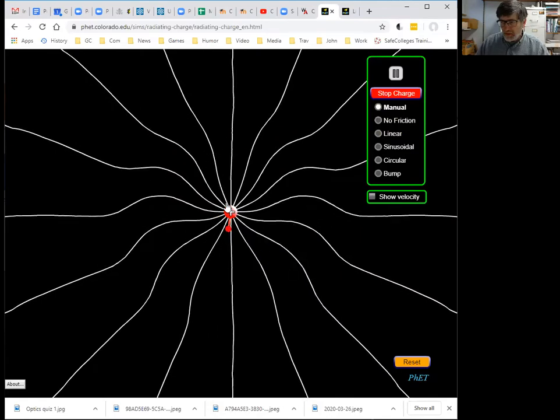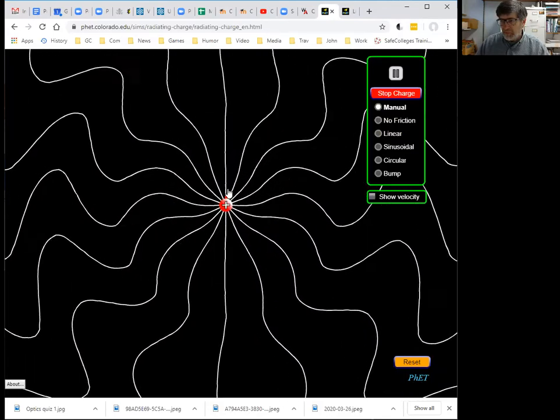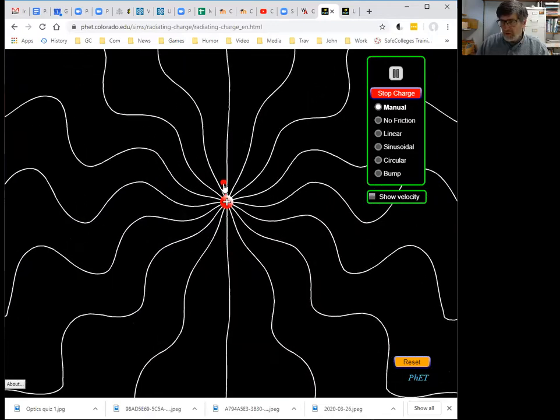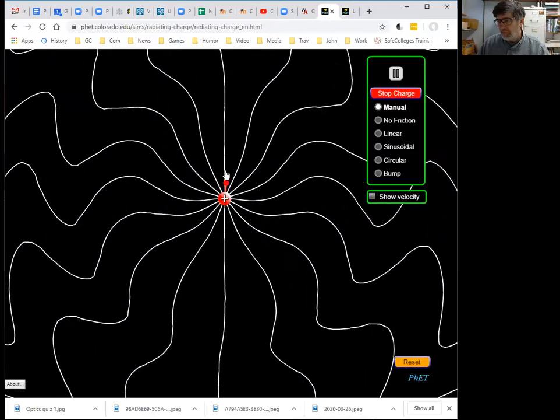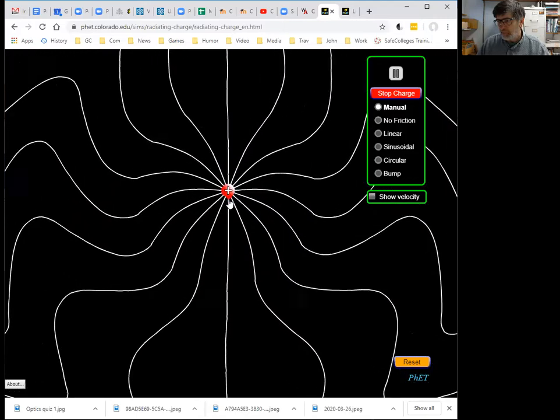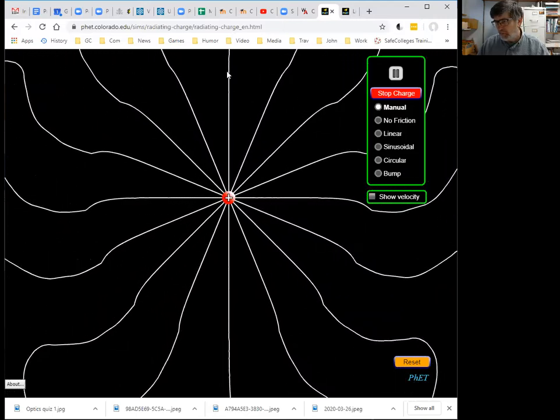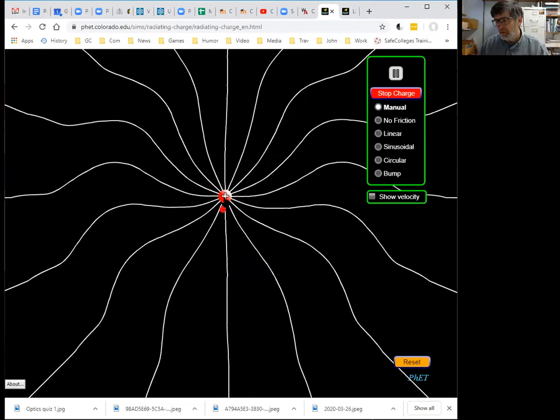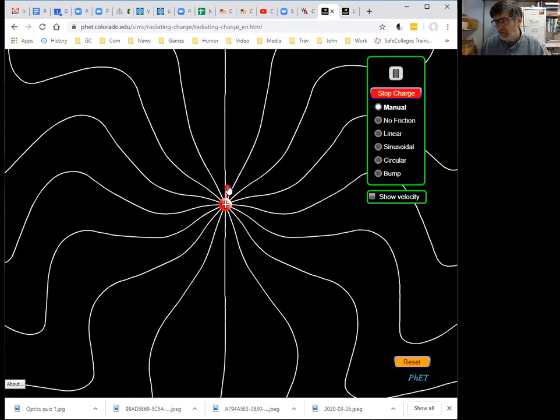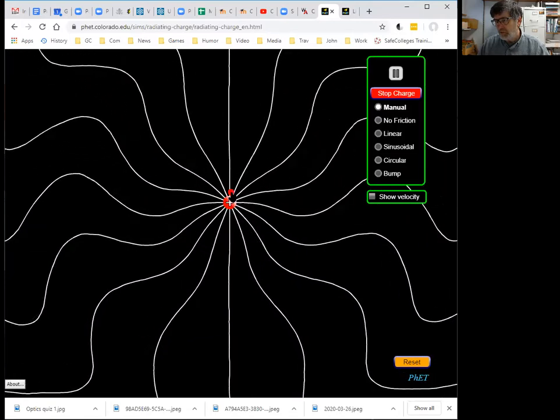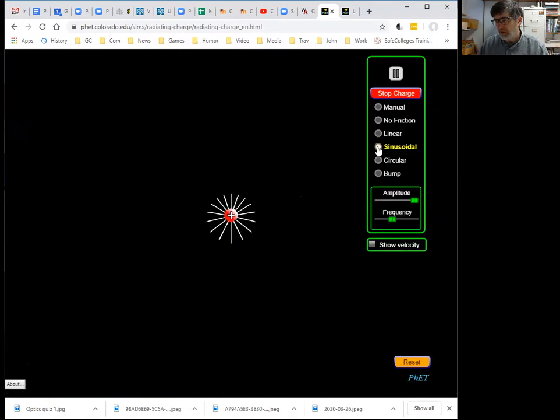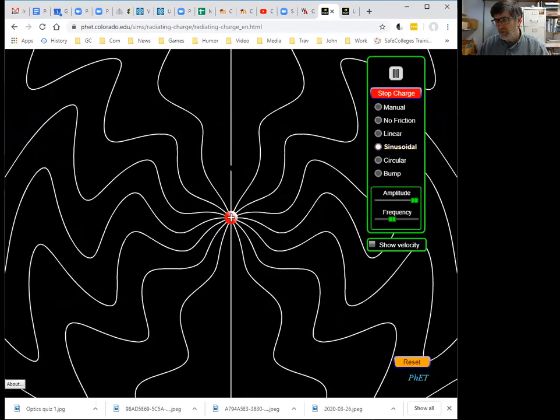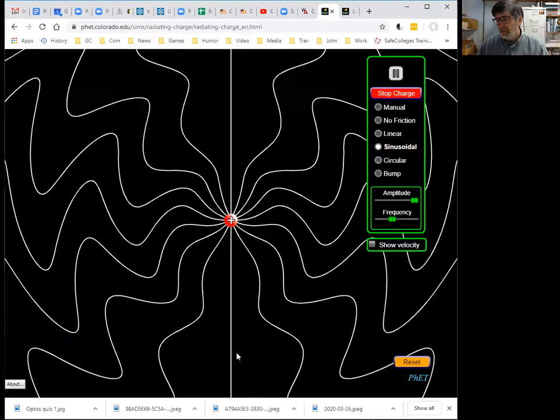So to get the waves that travel like this, you have to accelerate charge, and it radiates in nearly all directions. Except notice when I'm accelerating it up and down, in the straight up and down direction there's no radiating happening there. There's no wave traveling straight up and down. I managed to do it perfectly. I guess I could have them again do it. They can wiggle it beautifully up and down.